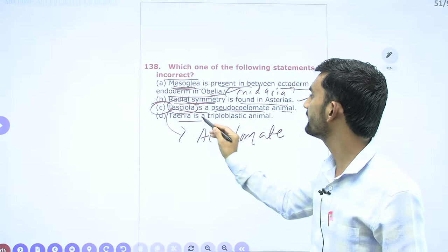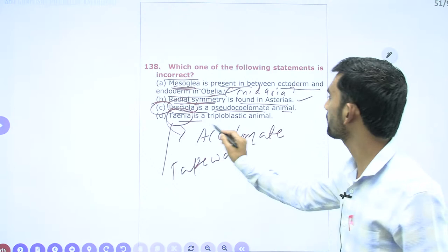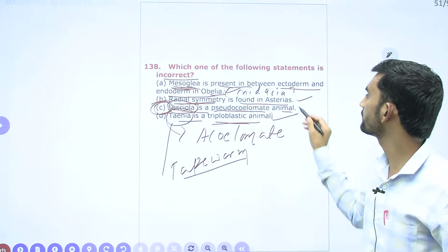Regarding the fourth option: Taenia (tapeworm or pork tapeworm) — these are triploblastic animals. The first triploblastic animals are Platyhelminthes or flatworms. So out of the four options, the third option — Fasciola is a pseudocoelomate animal — is the incorrect statement.